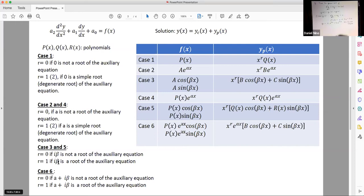In this case, i beta, where beta was 2, was a root of the auxiliary equation, so r is equal to 1.